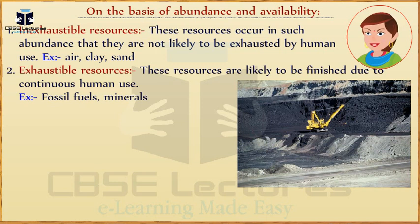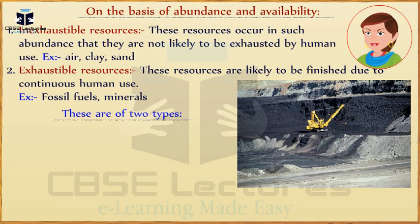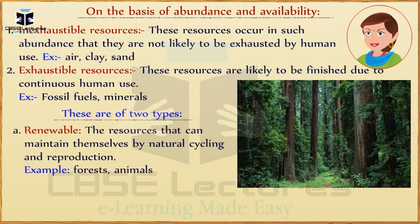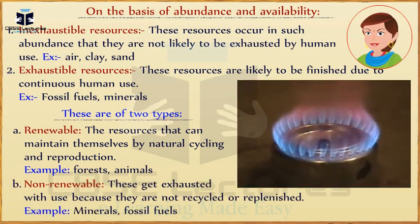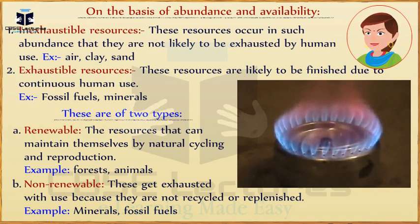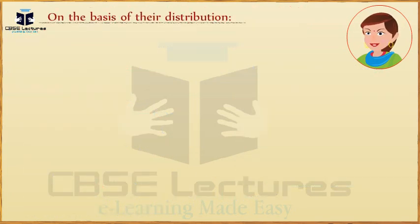Second, exhaustible resources — these resources are likely to be finished due to continuous human use. Examples: fossil fuels, minerals. There are two types: A) Renewable resources — resources that can maintain themselves by natural cycling and reproduction. Examples: forests, animals. B) Non-renewable resources — these are exhausted with use because they are not recycled or replenished. Examples: minerals, fossil fuels.